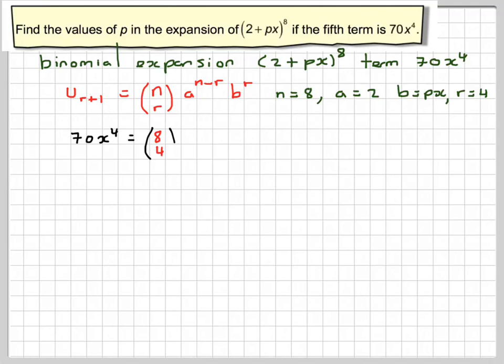So substituting that we're going to have 70x to the fourth is equal to 8C4, 2 to the 8 minus 4, brackets px to the power of 4.